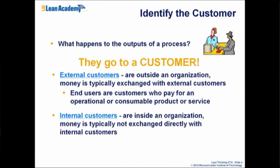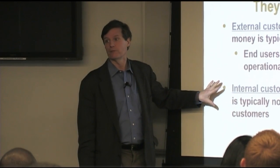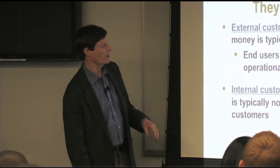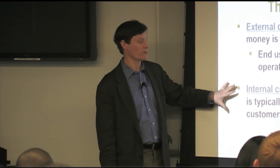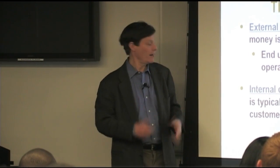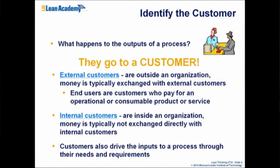In many complex processes, you may actually be working for an internal customer. A given step in a more complicated process may actually be working for somebody inside the organization. A classic case in aerospace is engineering operations — sometimes you do engineering for outside customers, but most of the time you do it for customers within your organization. In healthcare, there's a lot of service provision not directly affecting the patient but necessary to keep the hospital going. So thinking about customers with a little nuance is necessary.